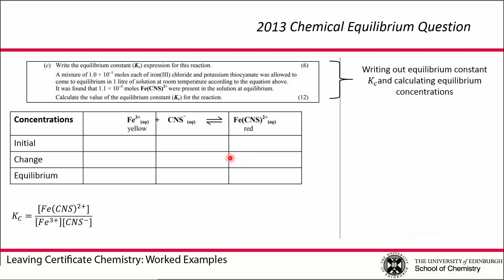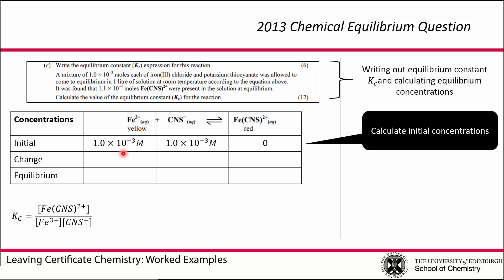Now we want to work out what the equilibrium constant is. Here we are given a way to work out the equilibrium concentrations, and we use those values in our expression for the equilibrium constant to work out Kc. We're told that we have 1 × 10^-3 moles of both of our reactants, and it's in 1 liter. So we can easily calculate the concentrations, because we have 1 × 10^-3 moles per liter, so they both give 1 × 10^-3 molar. We can assume that before the reaction starts, there is no concentration of product, so that's zero.